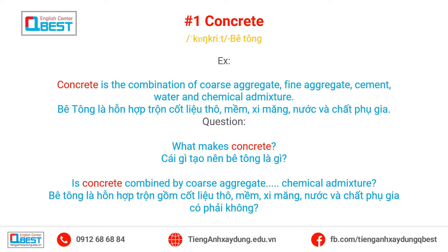Topic 1: Concrete. Example: Concrete is the combination of coarse aggregate, fine aggregate, cement, water and chemical admixture. Question: What makes concrete? Is the concrete combined by coarse aggregate and chemical admixture?